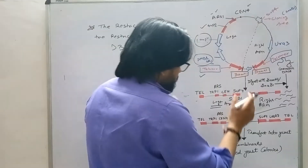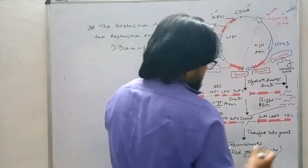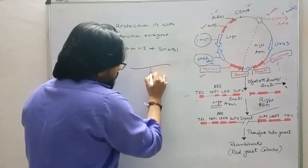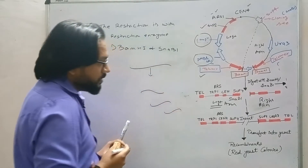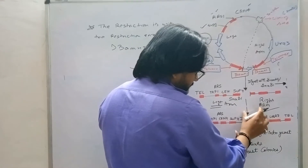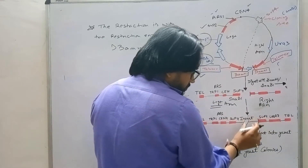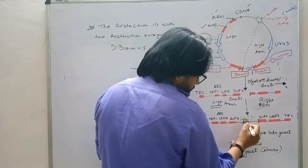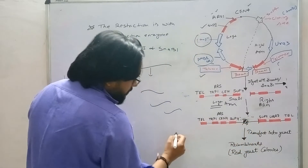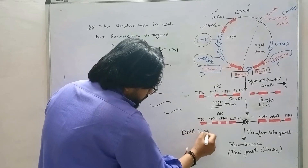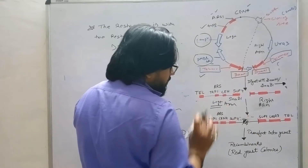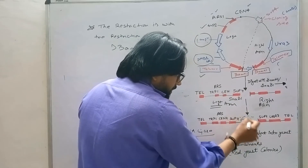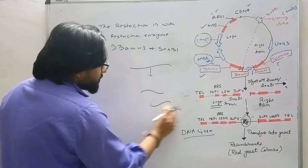Now this is the left arm and this is the right arm. We take the gene of interest from a genome by cutting with a restriction enzyme to get a fragment. The gene of interest is then added in the insert portion between the two arms, with the help of DNA ligase enzyme. So here the gene of interest is added between the left arm and the right arm.